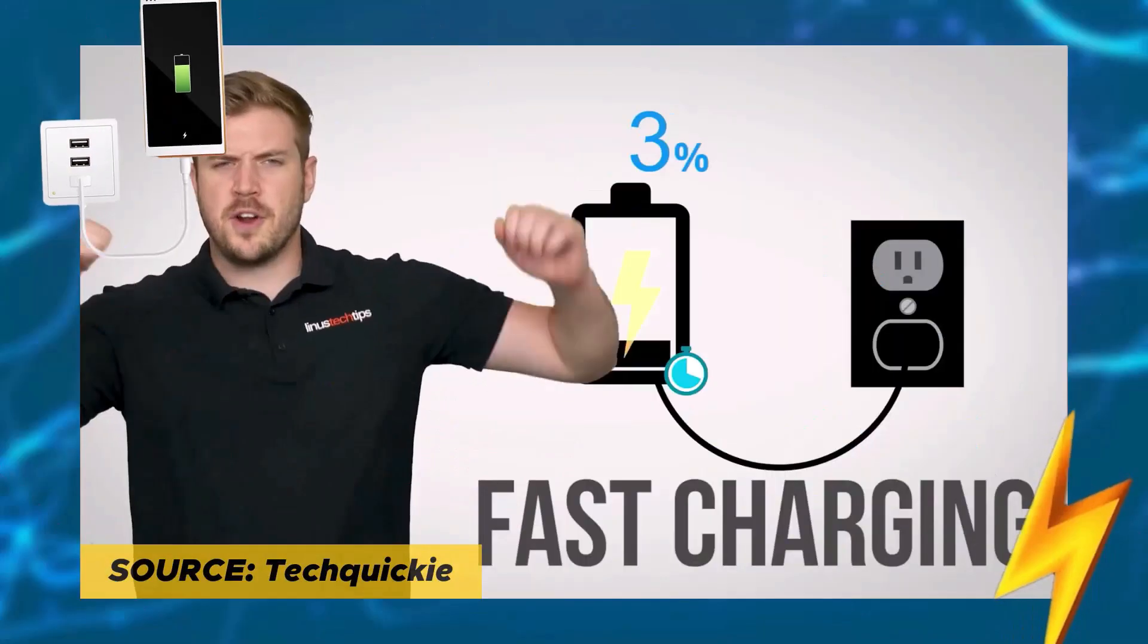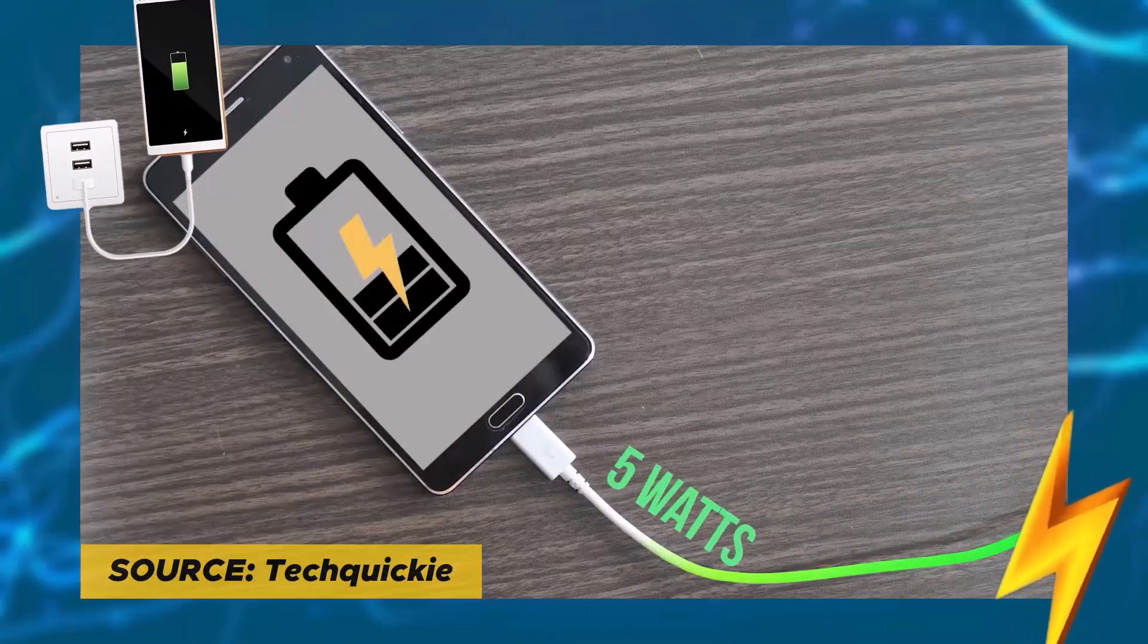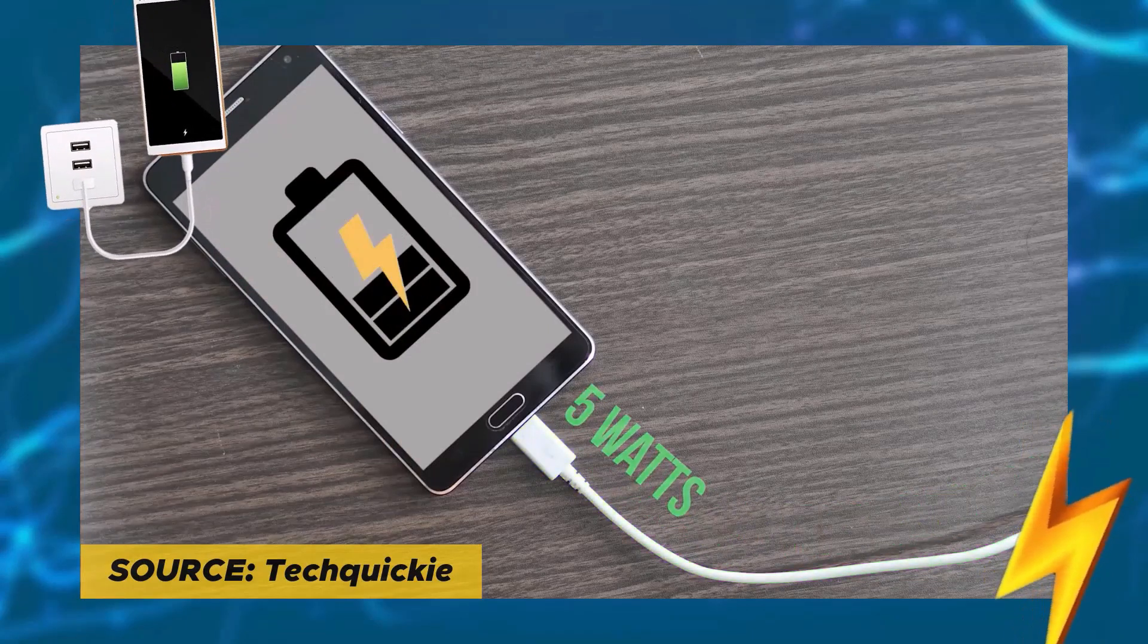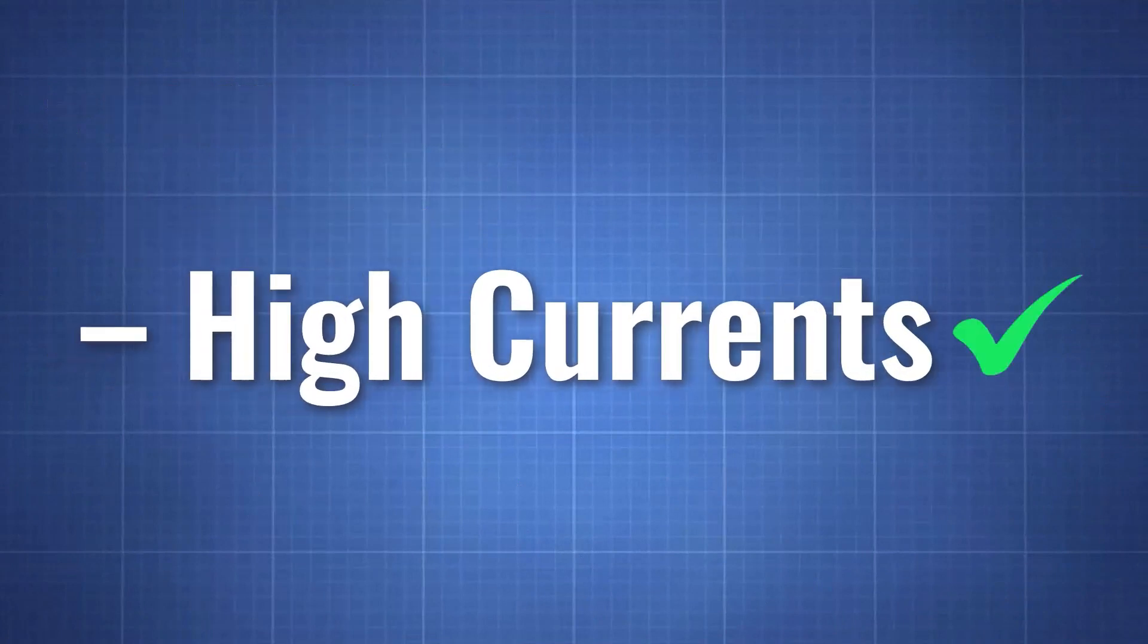Because you see, fast charging gives your battery the power it needs quickly, and the battery's charge controller helps keep it safe by controlling the flow of electricity and preventing dangerous spikes. So you are safe from getting high currents.